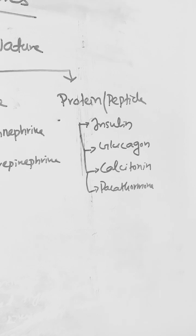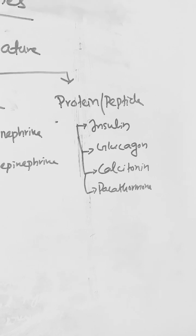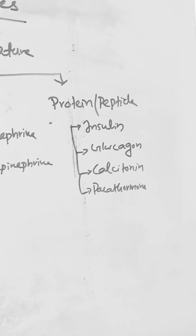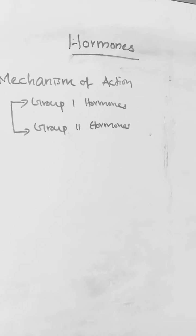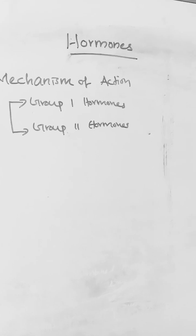Protein or peptide hormones include insulin, glucagon, calcitonin, and parathormone. Based on mechanism of action, hormones are classified into Group 1 and Group 2 hormones.